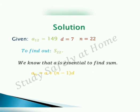aₙ equals a plus (n minus 1) times d. By substituting the respective values, we get 149 equals a plus 21 times 7. So 149 equals a plus 147, which gives us a equals 2. The first term is 2.